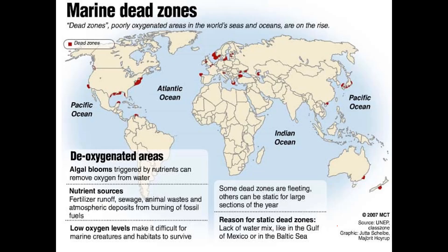We have many examples — the Baltic Sea and the Gulf of Mexico. Typically, the reasons for deoxygenating areas are algae blooms triggered by nutrients that remove oxygen from water. These nutrients come from fertilizer runoff, sewage, animal waste, and atmospheric deposits from burning of fossil fuels.